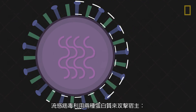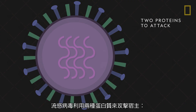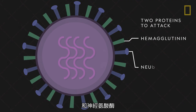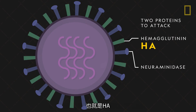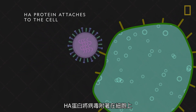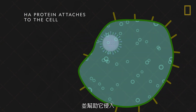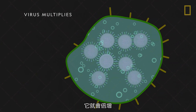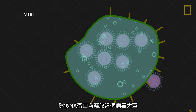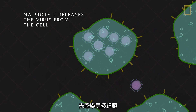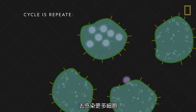The flu virus uses two proteins to attack its host: hemagglutinin and neuraminidase, or the HA and NA proteins. The HA protein attaches the virus to a cell and lets it in. Once the virus is inside, it multiplies. Then the NA protein cuts this viral swarm loose, sending it off to infect more cells.